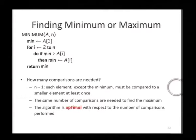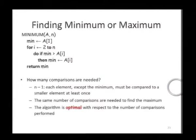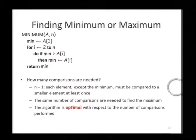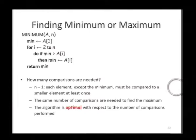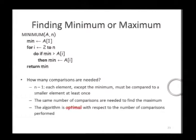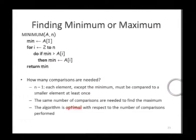Therefore, this algorithm that we have just discussed is an optimal algorithm with respect to the number of comparisons. The algorithm above performs exactly n minus 1 comparisons, and therefore this is an optimal algorithm.